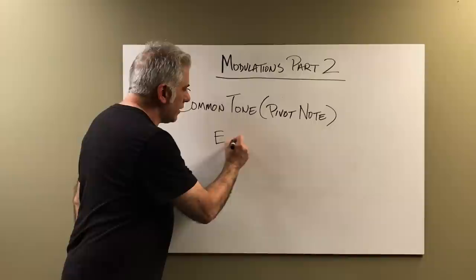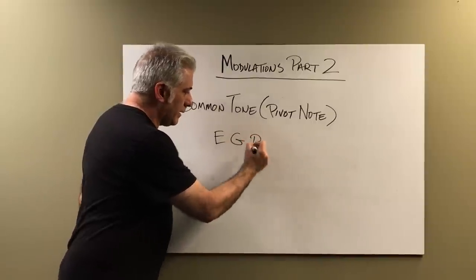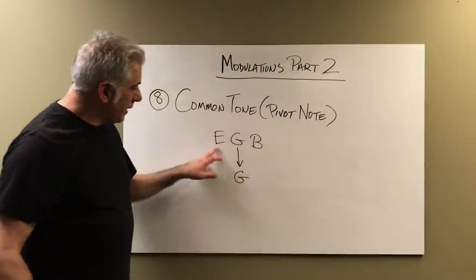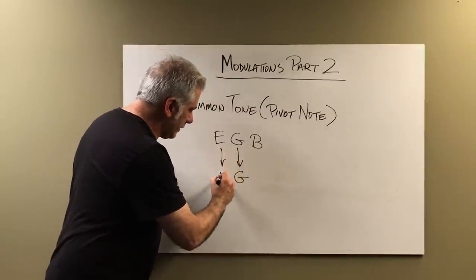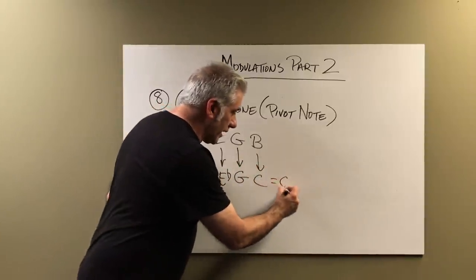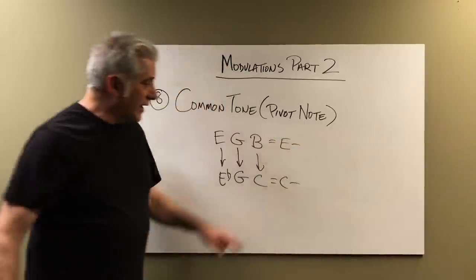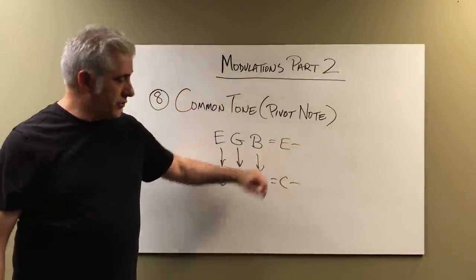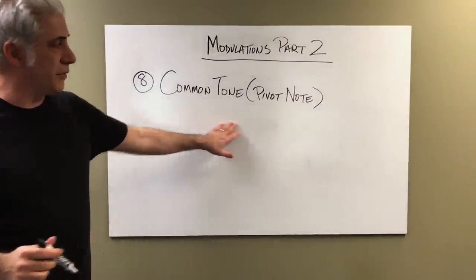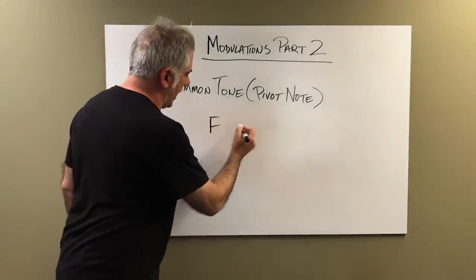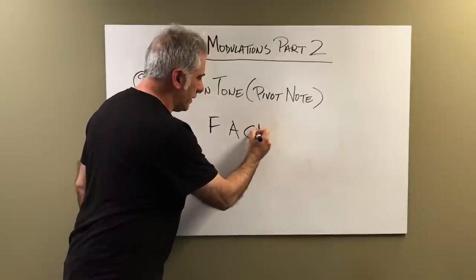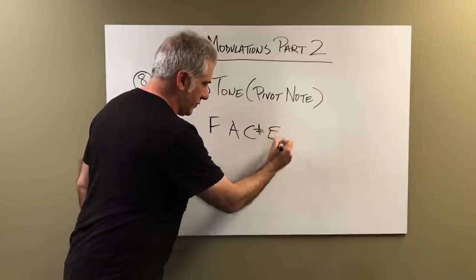You can have an E minor chord — E, G, B — and this G could stay there as your common tone. The E could move to E flat, B could move to C, and this is a C minor chord. This is actually a mediant relationship. Let me do a more complicated example: let's say you have a chord like F Lydian augmented — F major 7 sharp 5, spelled F, A, C sharp, E. That's F major 7 sharp 5, and it's actually also A major over F.